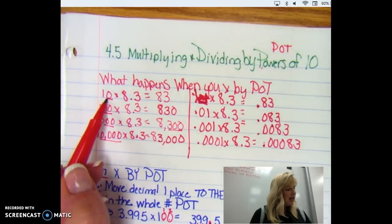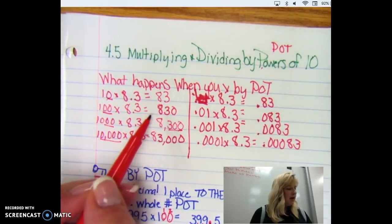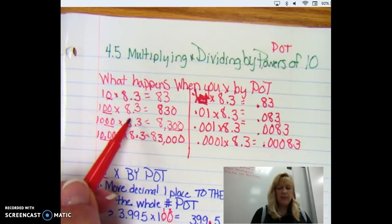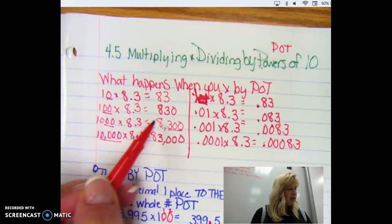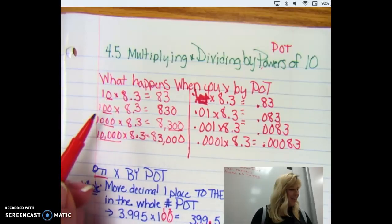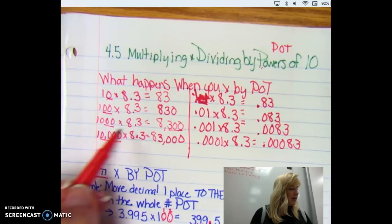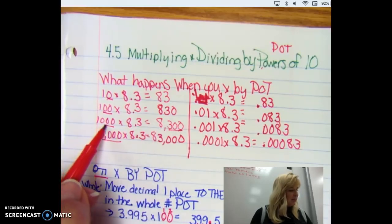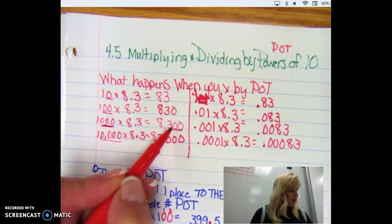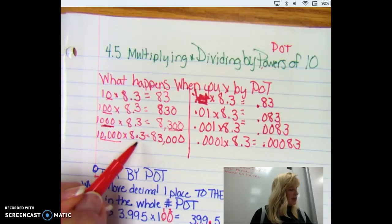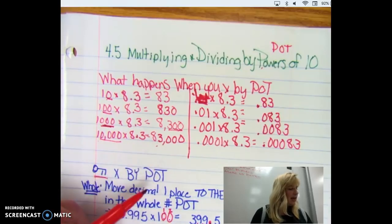If you look at 10 times 0.83 we get 8.3. If we look at 100 times 8.3 you get 830. When you multiply 1,000 times 8.3 you get 8,300. There's three—oh goodness I'm seeing a pattern here. So at 10,000 times 8.3 I get 83,000.